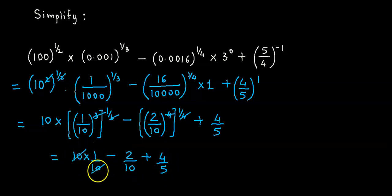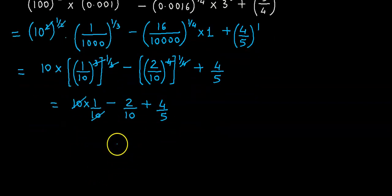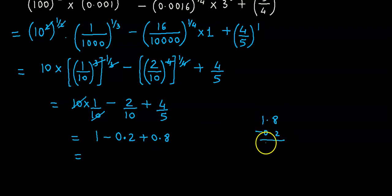Further, this 10 cancels with this 10 over here. Then if we proceed, we are left with 1 minus - now 2 over 10 is 0.2, and 4 divided by 5 is 0.8. Now 1 plus 0.8, that is 1.8, minus 0.2 gives us 1.6. So our final answer is 1.6.